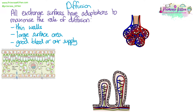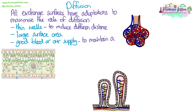Exchange surfaces will all have thin walls, a large surface area, and good blood or air supply. Thin walls — such as one-cell-thick walls in the villi of the small intestine — reduce diffusion distance and speed up diffusion. A large surface area increases the rate of diffusion. A good blood or air supply maintains a steep concentration gradient: substances that diffuse through are constantly moved along, creating a low concentration behind them so diffusion keeps occurring in the right direction.